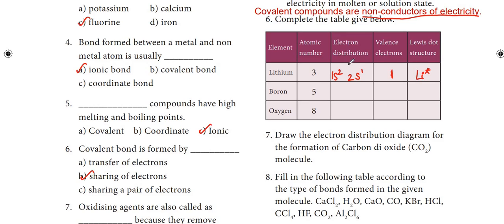Next, boron, atomic number 5. Electron configuration: 1s2, 2s2, 2p1. Valence electrons: 3. Lewis dot structure for boron: B with 3 dots — one, two, three.